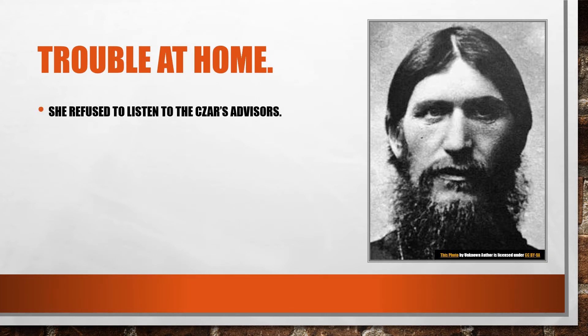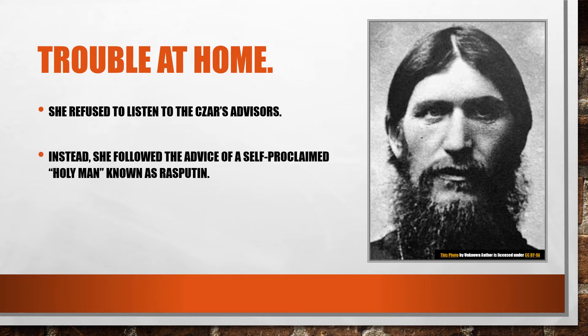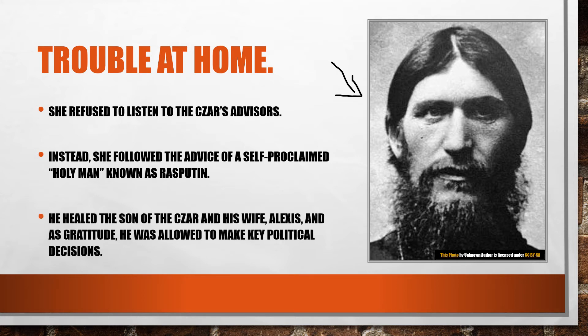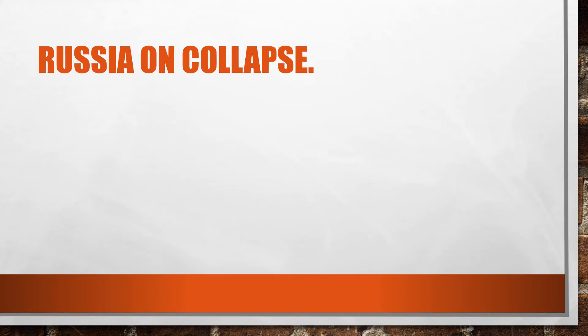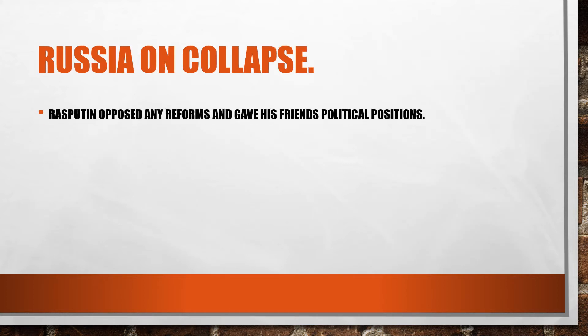Alexandra refused to listen to the Czar's advisors. Instead, she followed the advice of a self-proclaimed holy man known as Rasputin. The reason she trusted him was that he had healed the Czar's son Alexis, who had serious health problems. As a sign of gratitude, Rasputin was allowed to make key political decisions.